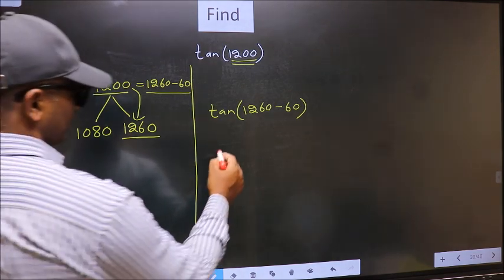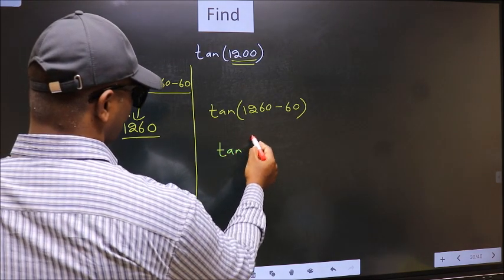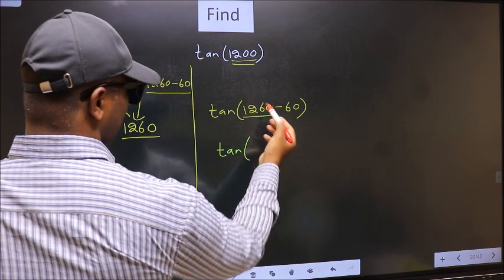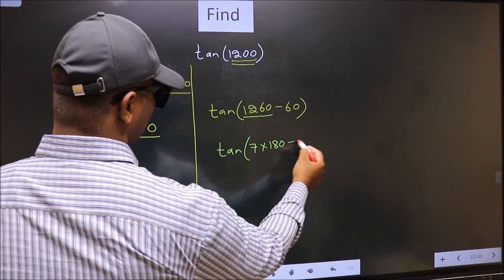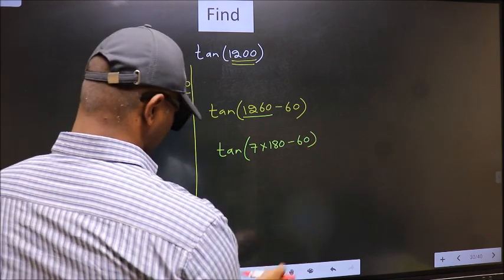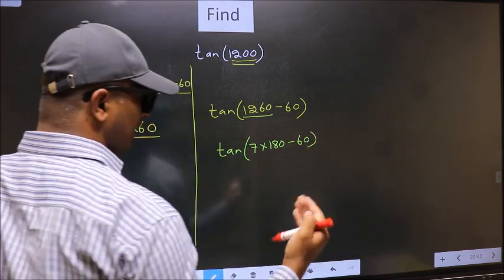Next, tan. In place of this, now we should write 7 × 180 minus 60.